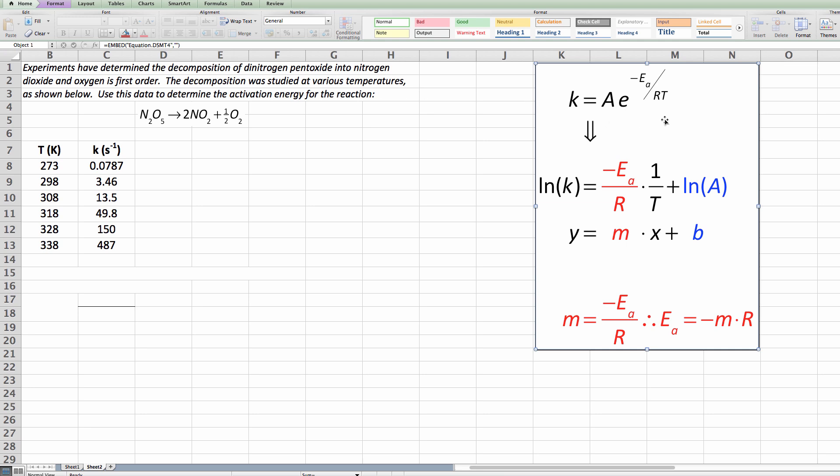So if we go to the Arrhenius equation, we can immediately see that if we have a relationship between the rate constant and the activation energy right here, the activation energy is a constant as is R, so the only variables we have are temperature and the rate constant itself.